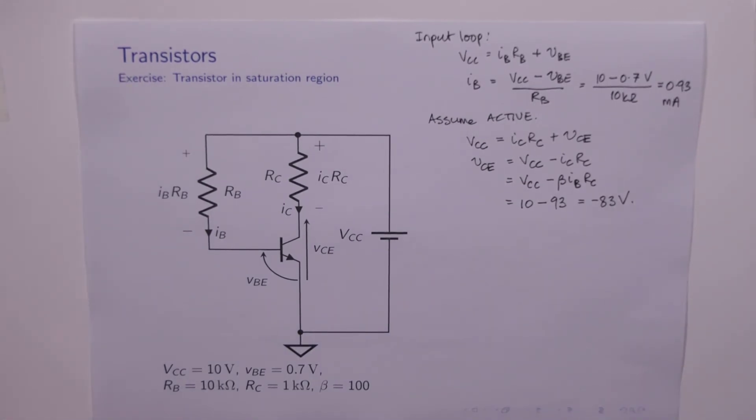is 93 volts. So we calculate that VCE is minus 83 volts. Does this seem reasonable?